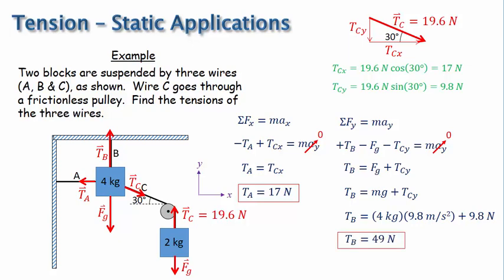And that's it for this problem and this video. Notice that this video is called tension static applications. Static means that the objects are not moving, which is why we were able to set the acceleration to zero. In the next video, we'll look at applications where the objects are accelerating.